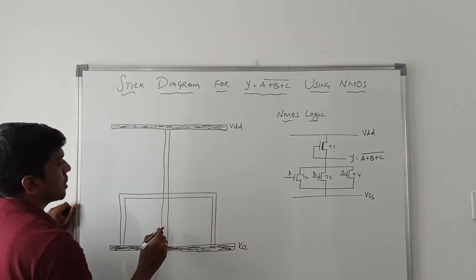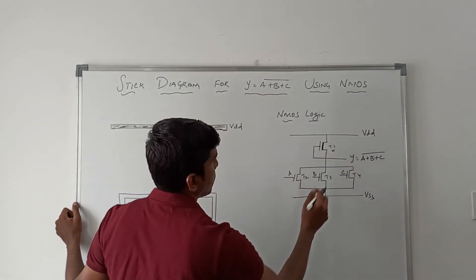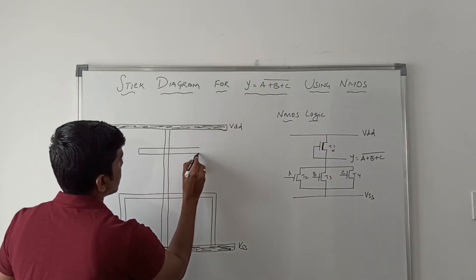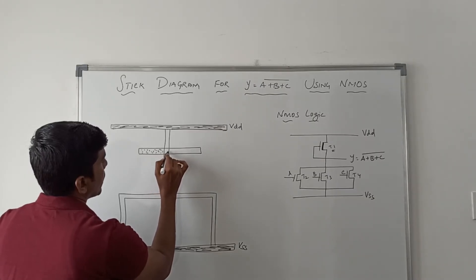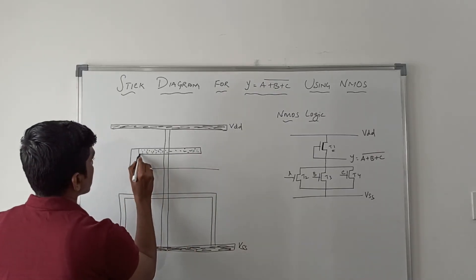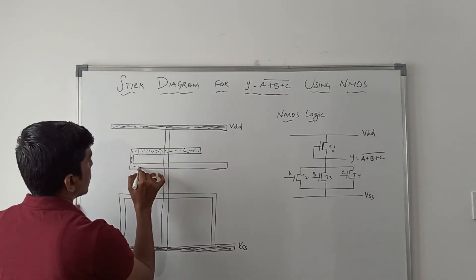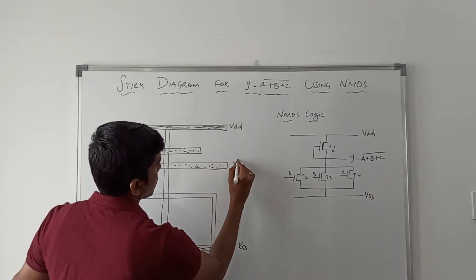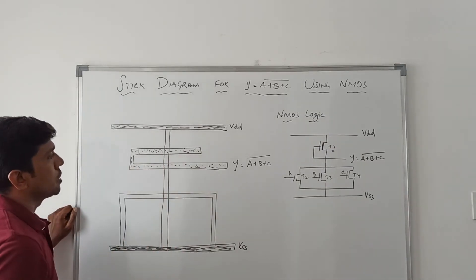After placing the N diffusion, I now fix the transistors. Transistor T1 is a depletion mode transistor, represented with the implant. The polysilicon layer is placed over the N diffusion. The output can be taken from this point. The output Boolean expression is Y equal to A plus B plus C, whole bar. The pull-up network is now completed.